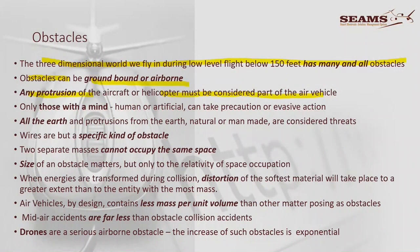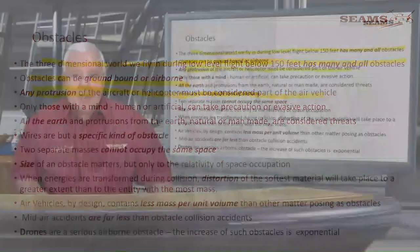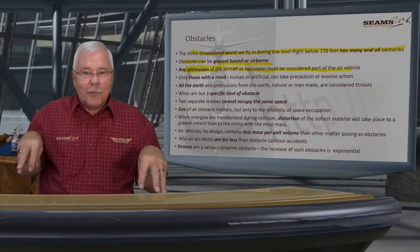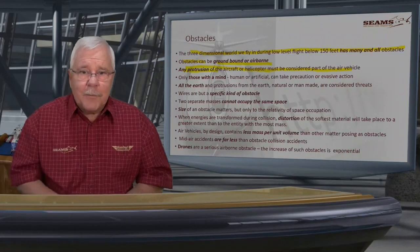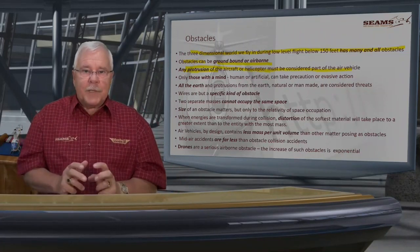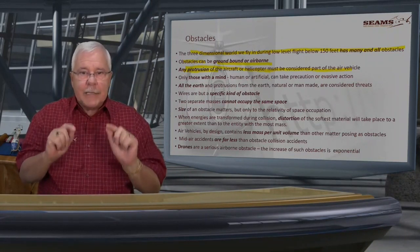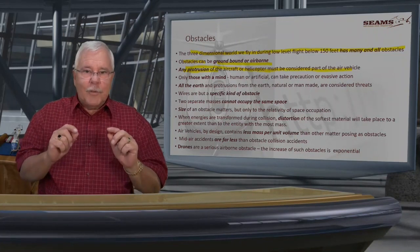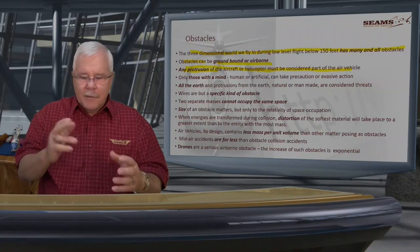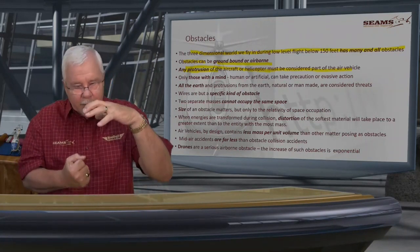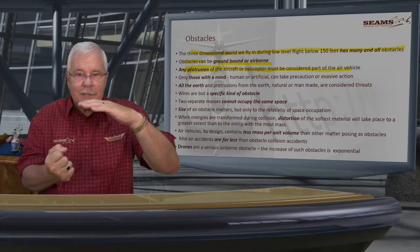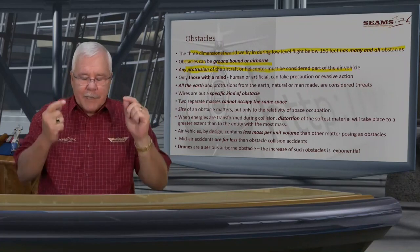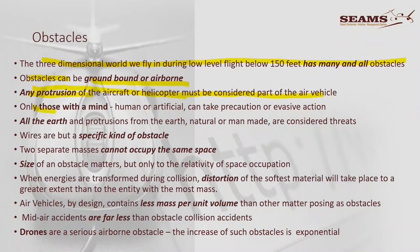Any protrusion of the aircraft or helicopter is part of the air vehicle. If you've got a little antenna sticking out, skids, poles, or crop spraying booms at the bottom — all of that is part of the helicopter. When you do cargo slinging, water buckets, and other external work, those things are attached to you; they become part of the helicopter. If there's any interference there, there's going to be interference here — it's a mindset change.